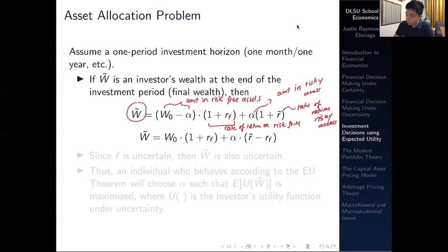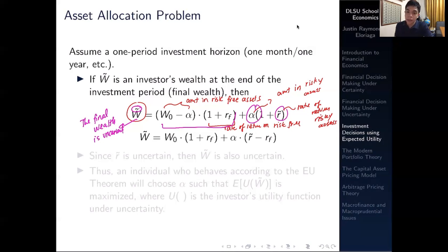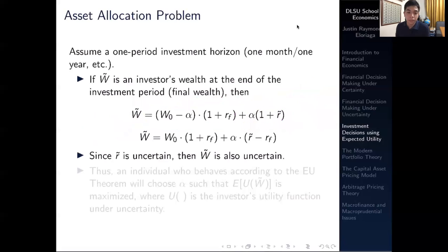Since W has a tilde, the final wealth is uncertain. The risk-free portion of the portfolio is certain, but the risky portion — and specifically R-tilde — introduces uncertainty. Since R-tilde is uncertain, the overall final wealth W-tilde is also uncertain, making it a risky wealth. In essence, the uncertainty from the risky asset propagates through to the end-of-period wealth.